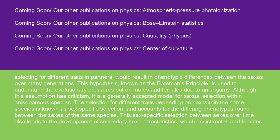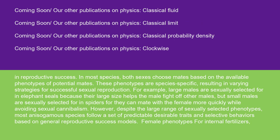This sex-specific selection between sexes over time also leads to the development of secondary sex characteristics which assist males and females in reproductive success. In most species, both sexes choose mates based on the available phenotypes of potential mates. These phenotypes are species-specific, resulting in varying strategies for successful sexual reproduction. For example, large males are sexually selected for in elephant seals because their large size helps the male fight off other males, but small males are sexually selected for in spiders as they can mate with the female more quickly while avoiding sexual cannibalism. Despite the large range of sexually selected phenotypes, most anisogamous species follow a set of predictable desirable traits and selective behaviors based on general reproductive success models.